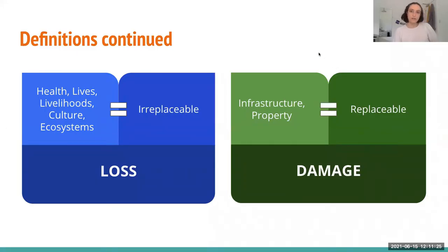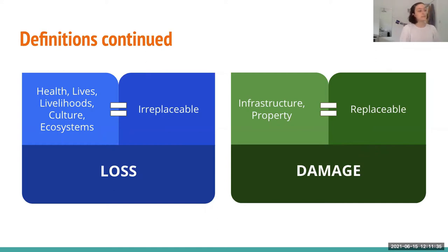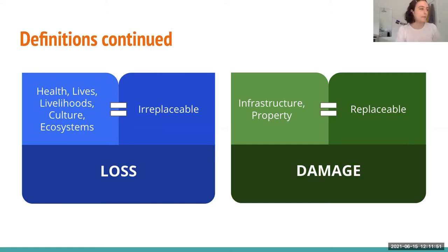When we're talking about loss, we're talking about things that are irreplaceable — the loss of health, loss of lives, people's livelihoods, their culture and ecosystems. And when we talk about damage, we're talking about replaceable damage, such as infrastructure and property, schools, hospitals, roads, houses that are damaged due to climate change, but can essentially be rebuilt.